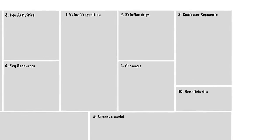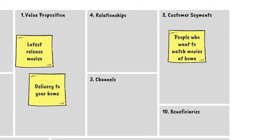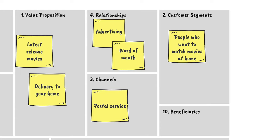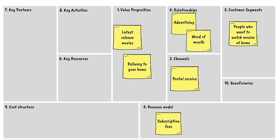Let's look at their business model. Their customer segments are people who want to watch movies at home. Their original value proposition was a range of latest release movies delivered straight to your door. A CD would be sent via the postal service to customers, and their relationships involved a range of marketing methods and word of mouth. Revenues were derived by a subscription payment and the customers paid per month. Key resources included warehouses to store the thousands of DVDs that they had, logistics to organize the shipping, and of course the actual library of DVDs that they needed.